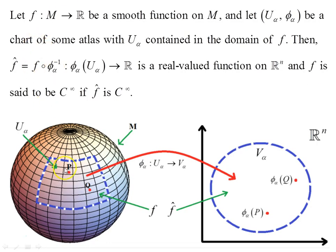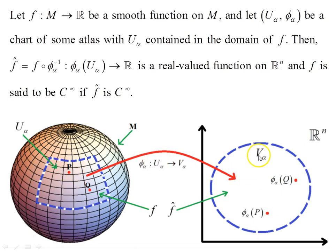Here is that manifold again: the open set U_alpha, points p and q. There is a mapping phi_alpha from U_alpha to Euclidean space of n dimensions, and that maps the open set U_alpha into V_alpha. The points p and q under this map are phi_alpha of q and phi_alpha of p.